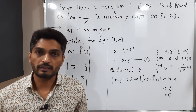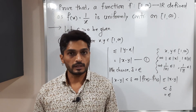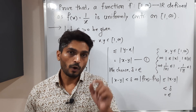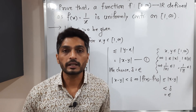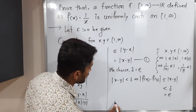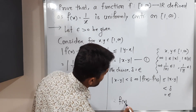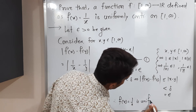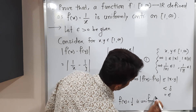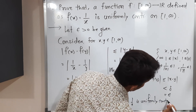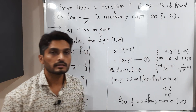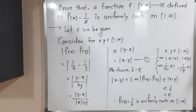We have shown |f(x) − f(y)| < epsilon, so the definition is satisfied. Therefore, f(x) = 1/x is uniformly continuous on [1, ∞). Please make a screenshot of this, and after that we will stop. Thank you, bye bye.